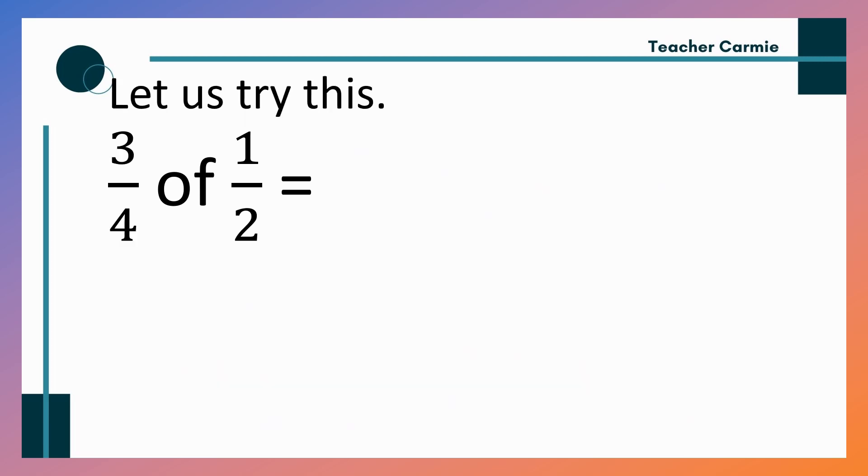Now, let us try another one. 3 fourth of 1 half. Again, a whole number. Una natin ang 1 half. So, divide natin vertically. 1 half. So, shade natin. Next. Change tayo ng color. Next. 3 fourths. So, horizontally, divide natin. Ilan? 4. Next. 3 fourths. So, 3. So, 3 lang yung shade natin. Pahal lang naman. So, 3. 1, 2, 3.